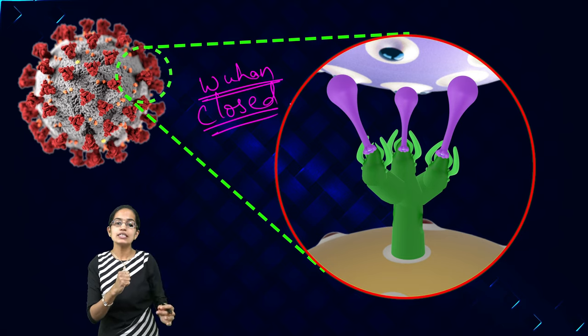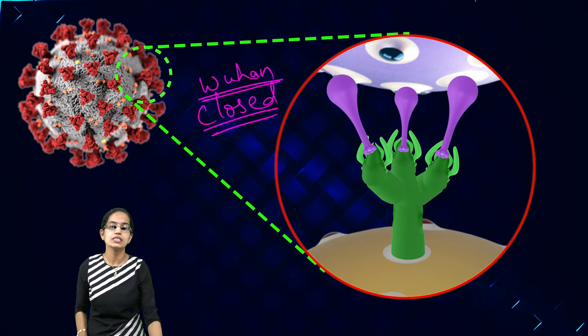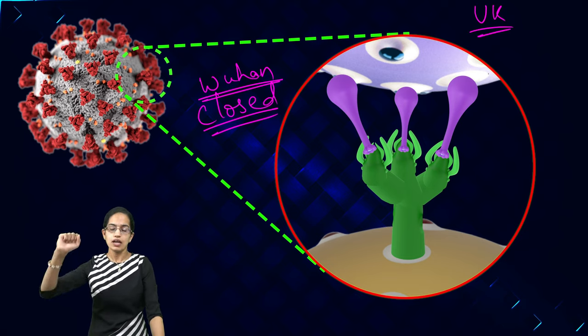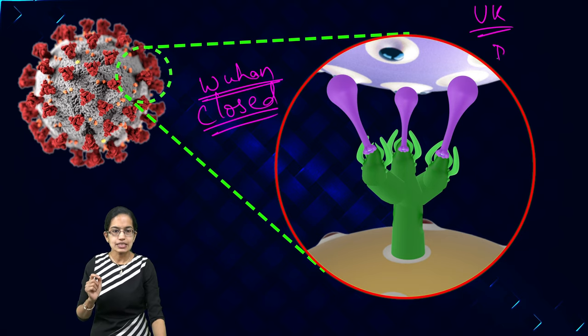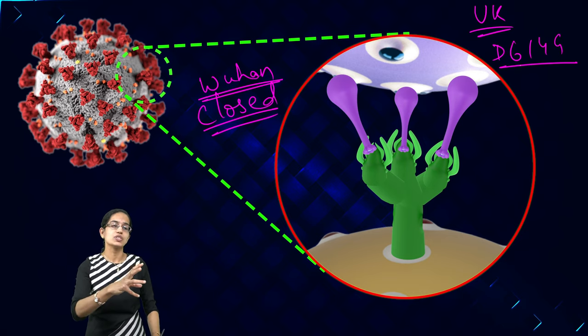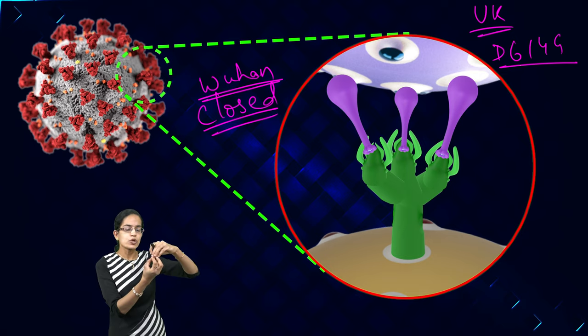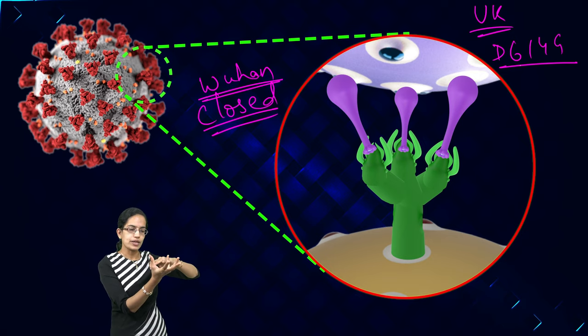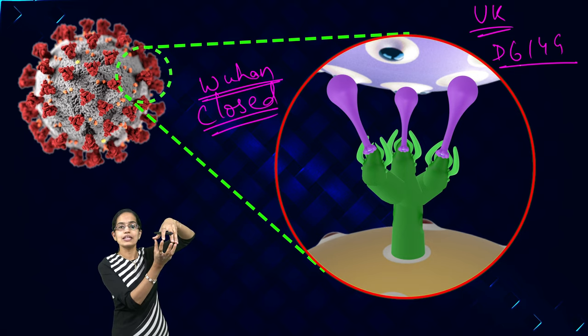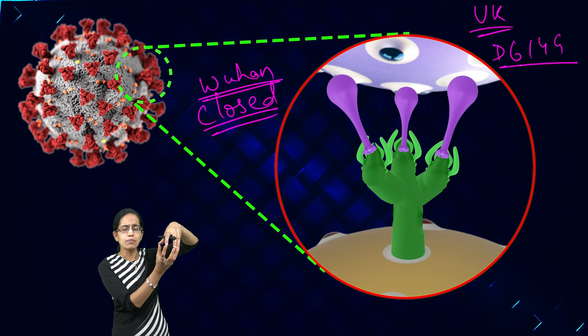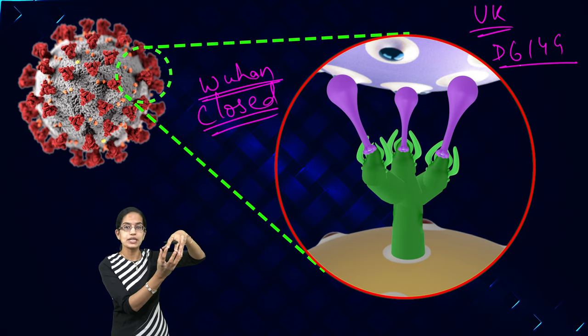However, the recent variations that have been seen with the UK variation, which is the D614G, we have seen that these protomers have started to open. Now once they have started to open, they exactly bind with the human cells and therefore help the infection transmit at a faster pace and they even become super spreaders.